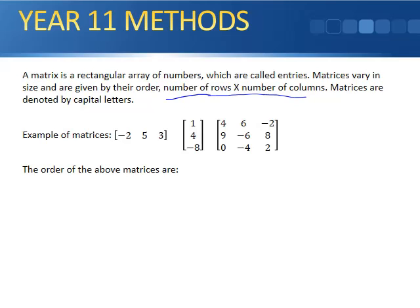Here are examples of matrices. We can have a row, a column, or even a square matrix, which is three rows and three columns. That's the order.